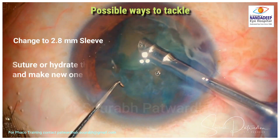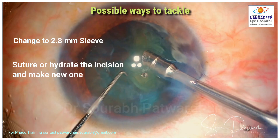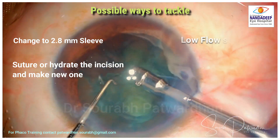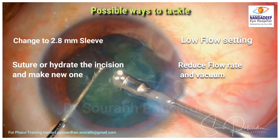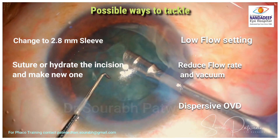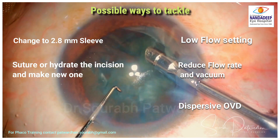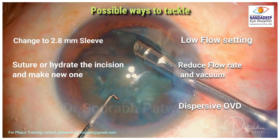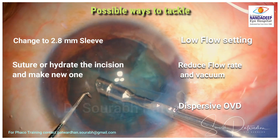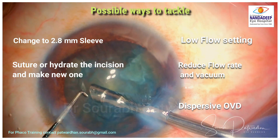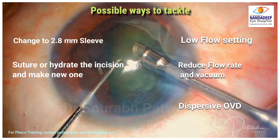What are the possible ways to tackle this situation? I can use a 2.8 mm sleeve, or if the incision is too large, I can suture and hydrate the incision and make a new one — that's the easiest option. Or I can resort to low flow settings: reduce the flow rate and vacuum until I get a stable anterior chamber.